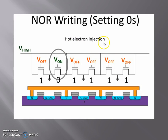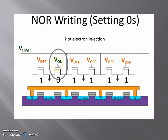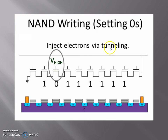In NOR writing, we use hot electron injection. We give a high source-to-drain voltage, so we give a high voltage to the bit line. To write to a specific transistor, we need to set up a channel, so we give a high gate voltage to that respective transistor and low voltage to all others. Therefore, 0 is written to that specific transistor. In NAND writing, we use the Fowler-Nordheim tunneling method. We apply a high voltage to the gate of the transistor we are interested in. Due to that high voltage, the electrons from the drain are attracted, cross the barrier, and are trapped into the floating gate. Therefore, 0 is written to that transistor.